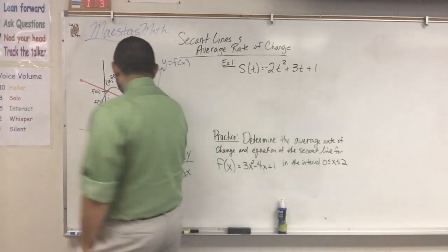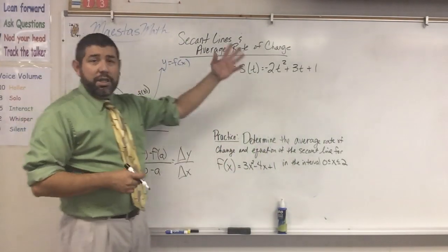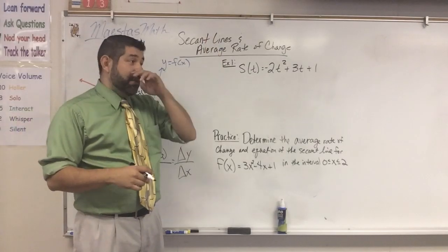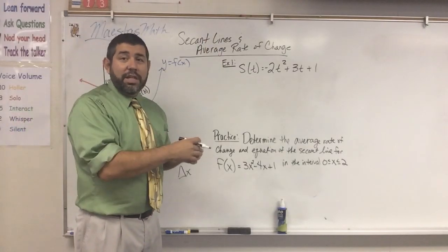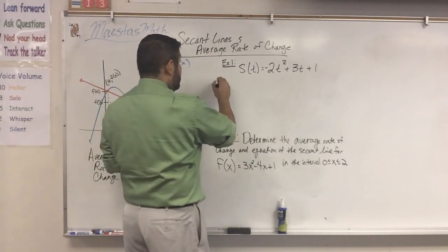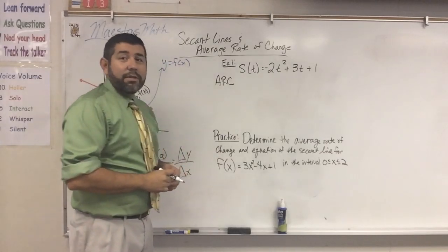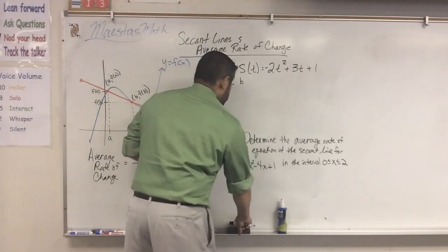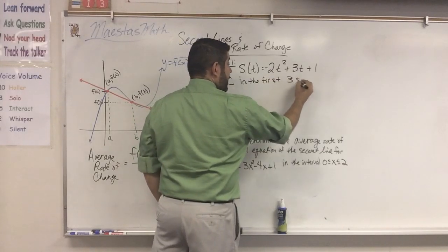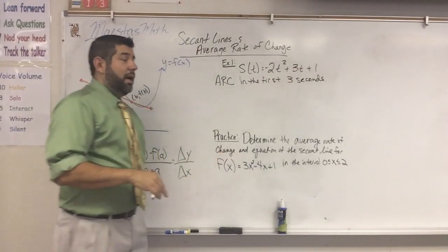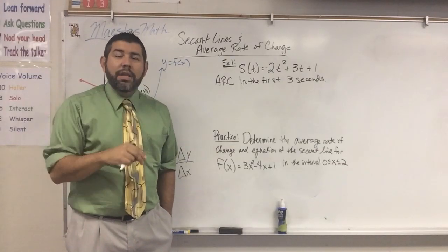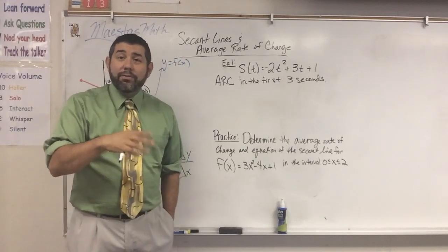Here's my first example. Let's suppose for some position, we have an object that's flying or going up and down. The position of this object at any time t can be described by this function. I want to find the average rate of change in the first three seconds. This function describes the position of whatever this is — like a bug or a particle — at time t, and we're going to find the average rate of change of that.